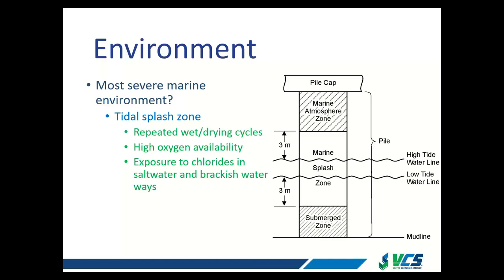The submerged zone is where everything is always submerged. While we have plenty of water and chloride exposure, there is less oxygen — however, there still will be corrosion activity, just slower than the marine splash zone. A common misconception is that submerged structures won't have oxygen for corrosion — there's plenty of oxygen in water, as evidenced by marine plant and animal life. Then we have the atmospheric zone — at the coast, air carries moisture and salts that deposit onto structures and cause corrosion. We classify these three zones and do different things to mitigate corrosion in each of them.